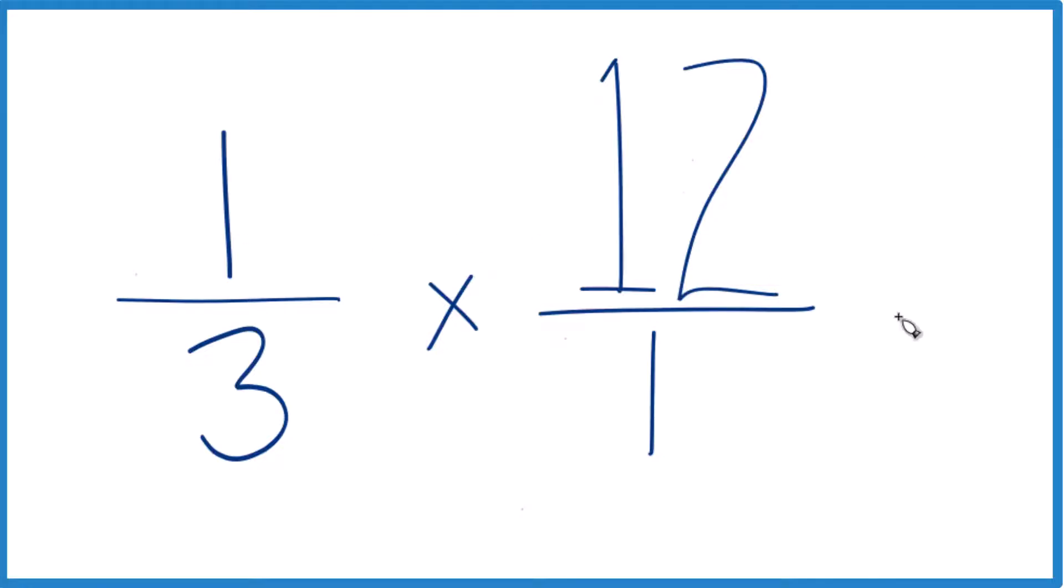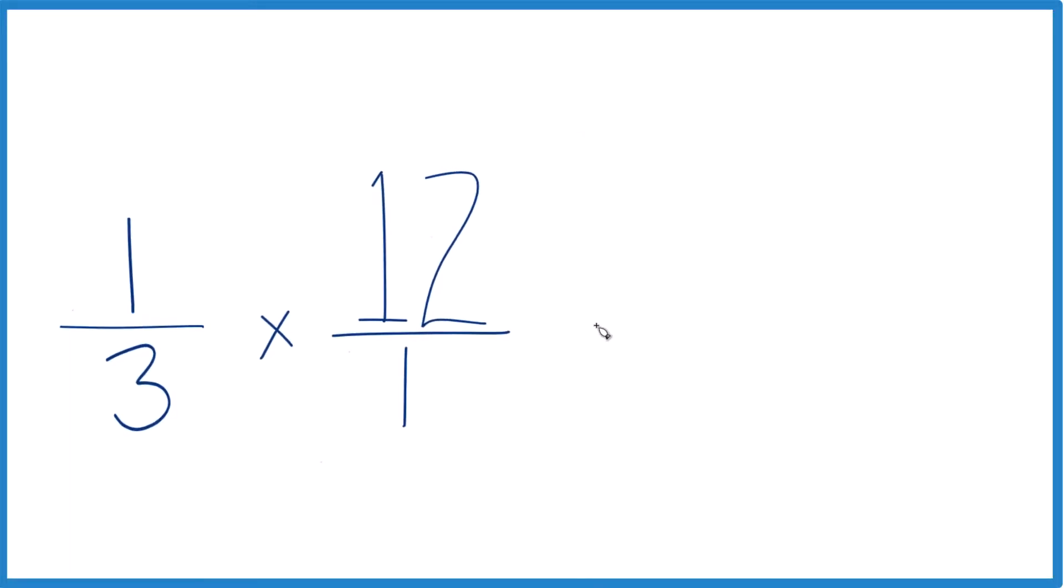But now the numerators line up and the denominators. When we multiply fractions, we multiply the numerators and the denominators. So 1 times 12 equals 12, and 3 times 1 equals 3.